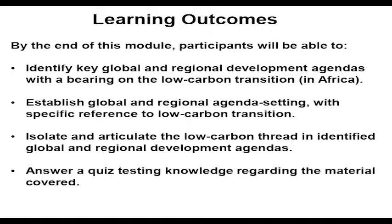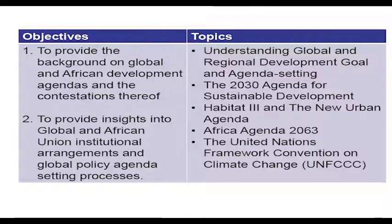We will also be able to isolate and articulate the low-carbon thread in identified global and regional development agendas, and answer a quiz testing knowledge of the material covered. In terms of objectives, we have two: to provide the background on global and African development agendas and the contestations thereof, and to provide insights into global and African Union institutional arrangements and global policy agenda settings. Our topics are: understanding global and regional development goals and agenda setting; the 2030 Agenda for Sustainable Development including Habitat III and the new Urban Agenda; Africa Agenda 2063; and the UNFCCC.